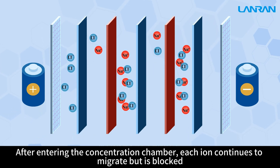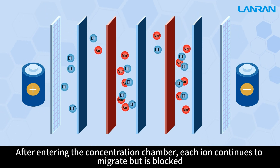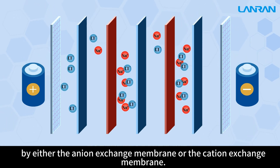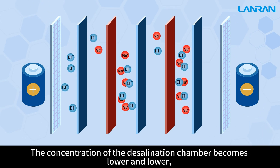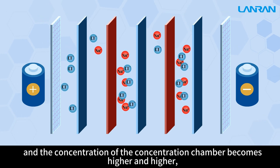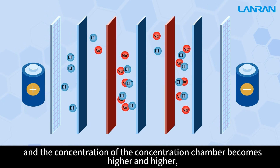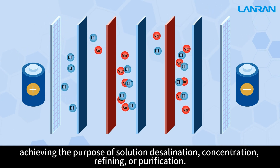After entering the concentration chamber, each ion continues to migrate but is blocked by either the anion exchange membrane or the cation exchange membrane. The concentration of the desalination chamber becomes lower and lower, and the concentration of the concentration chamber becomes higher and higher, achieving the purpose of solution desalination, concentration, refining, or purification.